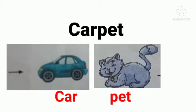Children, the next word is Carpet. In Carpet, two words are hidden. Which are the two words hidden, children? Yes — the first one is Car and the second one is Pet.